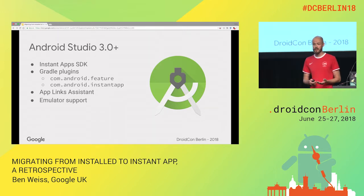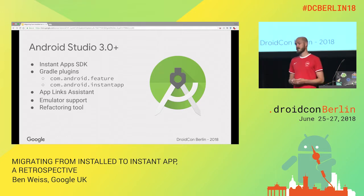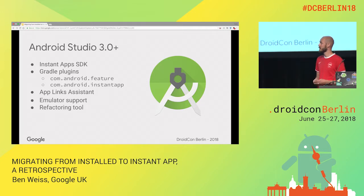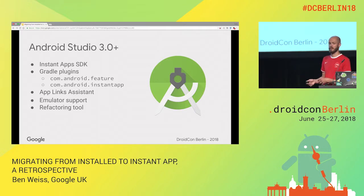The emulator supports it too — all emulators with Google Play services support Android Instant Apps. There's also a refactoring tool, which we're still heavily developing, and for Kotlin we're working on that. That's why I'm not going into too much depth on the refactoring tool, but I will go through the manual processes and the thought processes you have to go through, and what usually should go where.